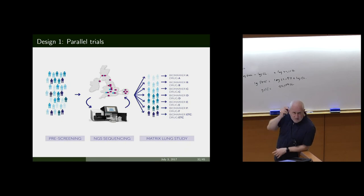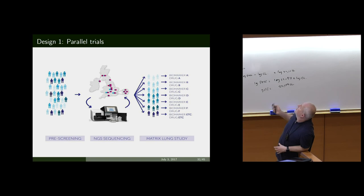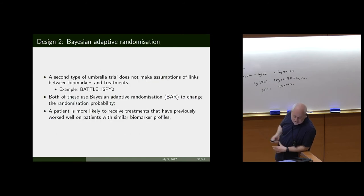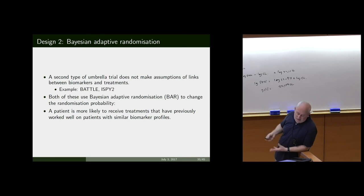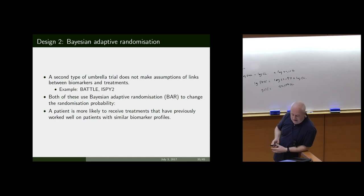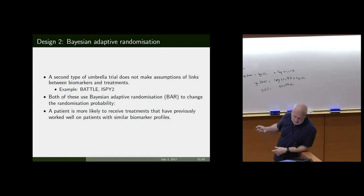In the National Lung Matrix trial, you take an unselected population, do some sequencing, then decide which sub-trial they go into, assuming treatments are selected for their biomarker of interest. The Bayesian adaptive randomization approach — exemplified by I-SPY — doesn't assume fixed links between biomarkers and treatments. It looks at success probabilities in each subgroup and adapts the allocation ratio at interim analyses. This is deemed positive for patients because they're more likely to receive a treatment that's successful for them, which should increase recruitment rates.